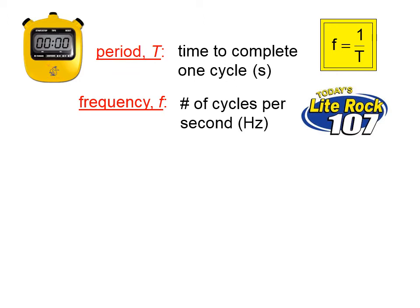For example, if it takes two seconds to complete one cycle, then the number of cycles that would be completed each second would be one-half. If it took three seconds to complete one cycle, then the number of cycles completed per second would be one-third. So the period and the frequency are inverses of each other.